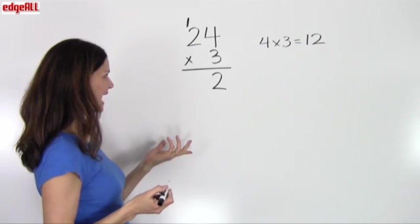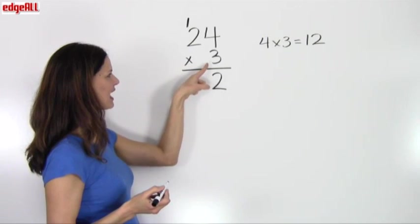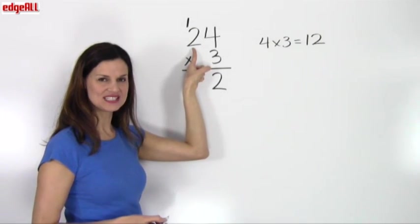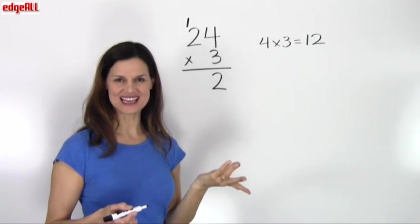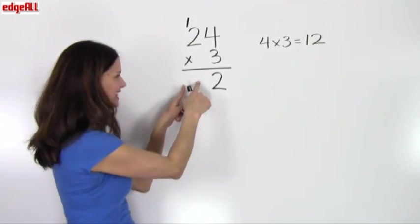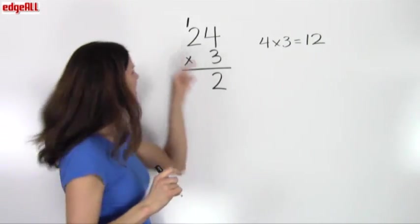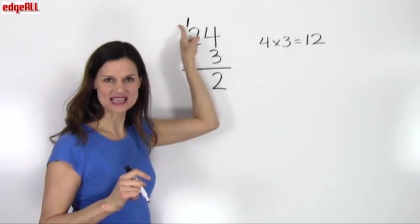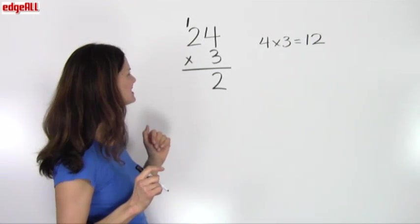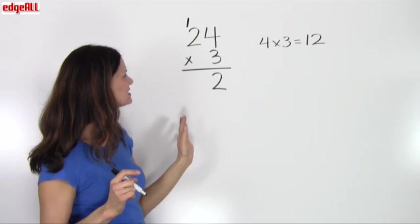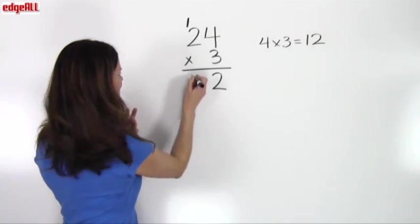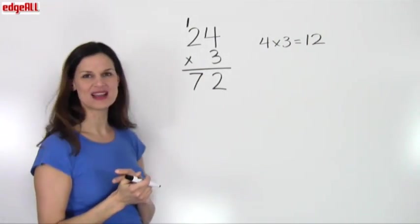The next step is to multiply 3 by the digit that's in the tens place of my 24, which is a 2. So 3 times 2 equals 6, but I'm not finished yet. I take this 1 that I carried over or regrouped from my previous step, and I add it to the 6. So 3 times 2 equals 6, plus 1 equals 7. My answer for my tens place is 7.